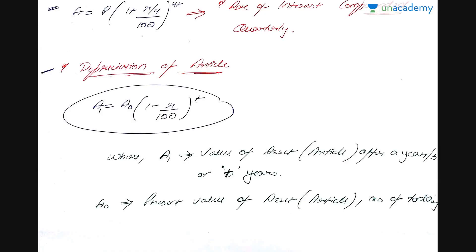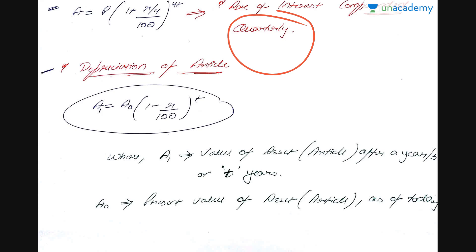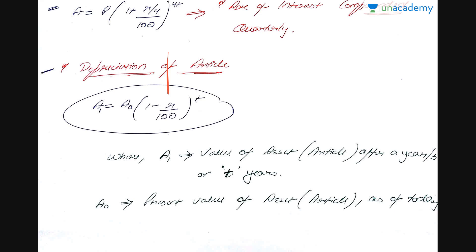Another case is when the rate of interest is compounded quarterly — not annually or semi-annually, but every quarter. Since a year has four quarters, you divide the rate of interest by 4 and multiply the time period by 4. For example, 10% per annum becomes 10/4 = 2.5% quarterly. You need to take care of this nomenclature when it appears in the question.